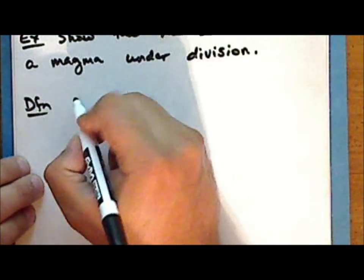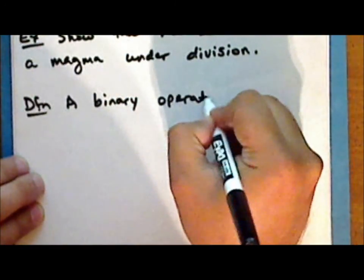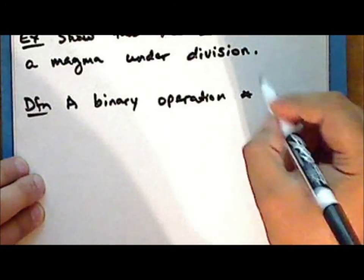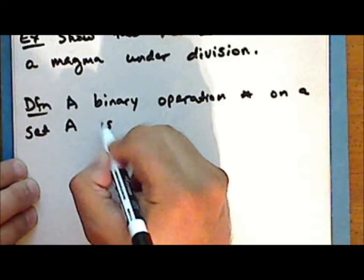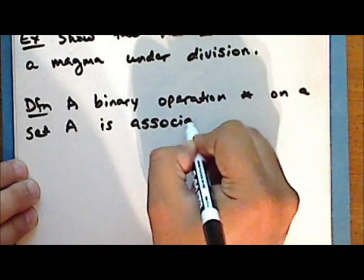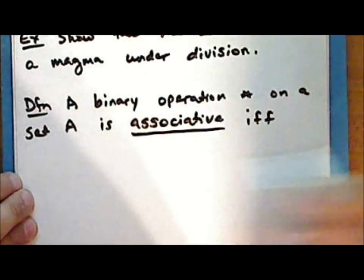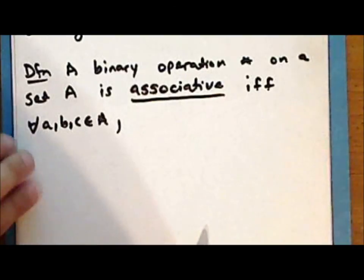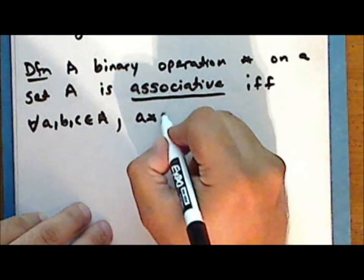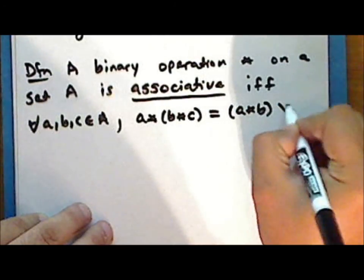New definition: a binary operation, which we'll denote with the symbol ★, on a set A is associative if and only if for every three elements A, B, and C in the set A, A ★ (B ★ C) = (A ★ B) ★ C.